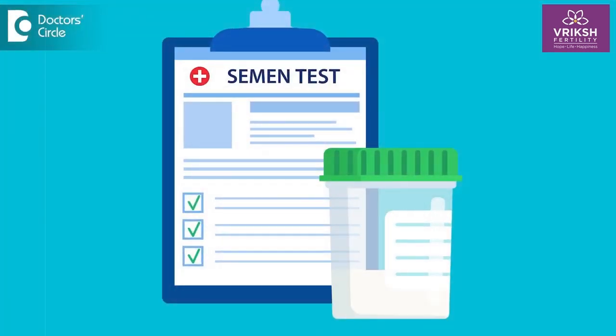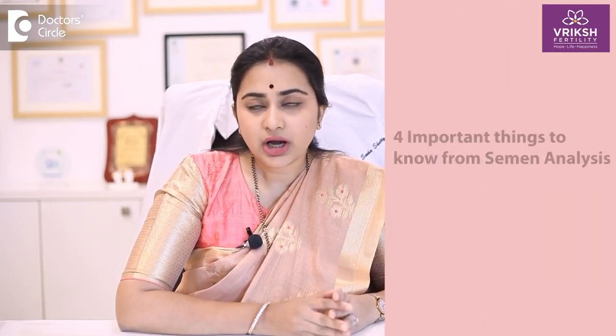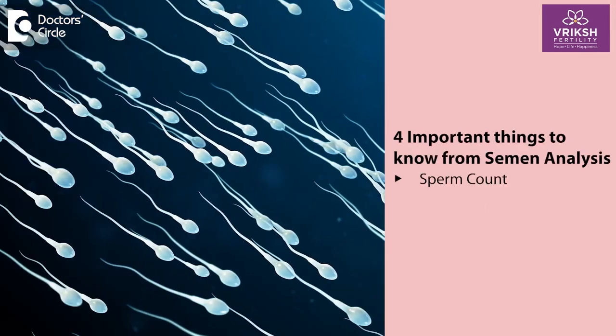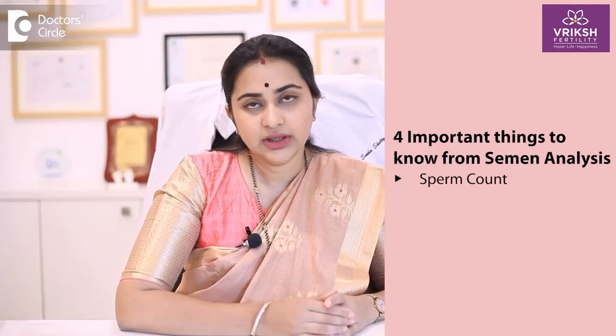Once the semen sample is collected in the fertility center, it is examined by an andrologist and a detailed report is prepared. We usually come to know about four important points. Firstly, it is the count — how many sperms are there in the sample, in the entire sample or how many sperms are there per ml of the sample.